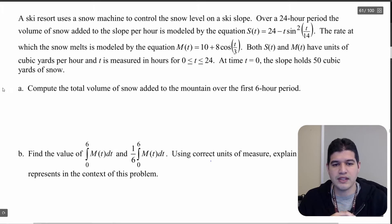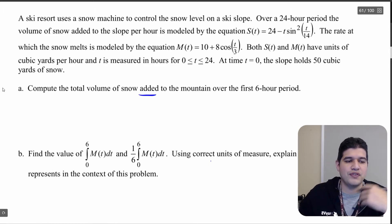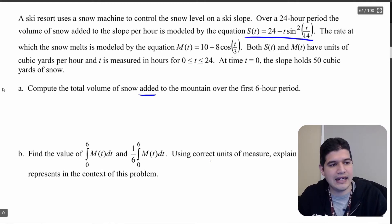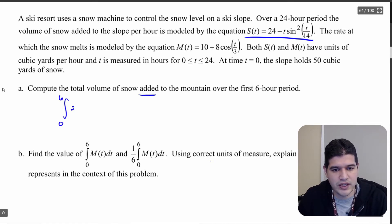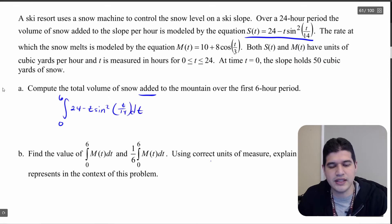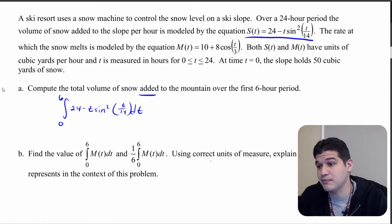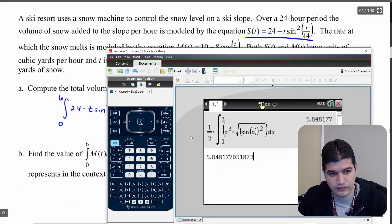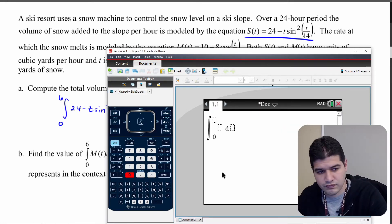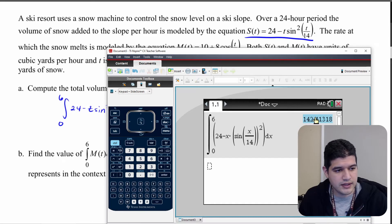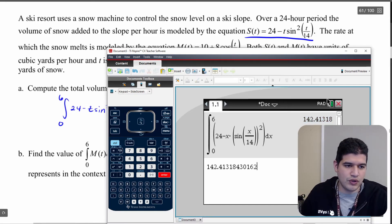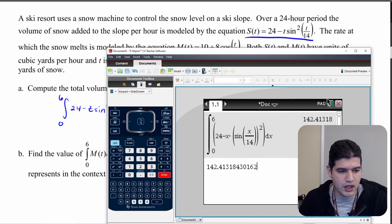The first thing we want to do is compute the total volume of snow added to the mountain over the first six-hour period — so how much snow gets added over six hours. The total volume is going to be the integral from zero to six of 24 minus t times sine squared of t over 14, dt. This gives me the total volume of snow added, without considering how quickly it melts. When I calculate this, going to four decimal places, I get 142.4132.